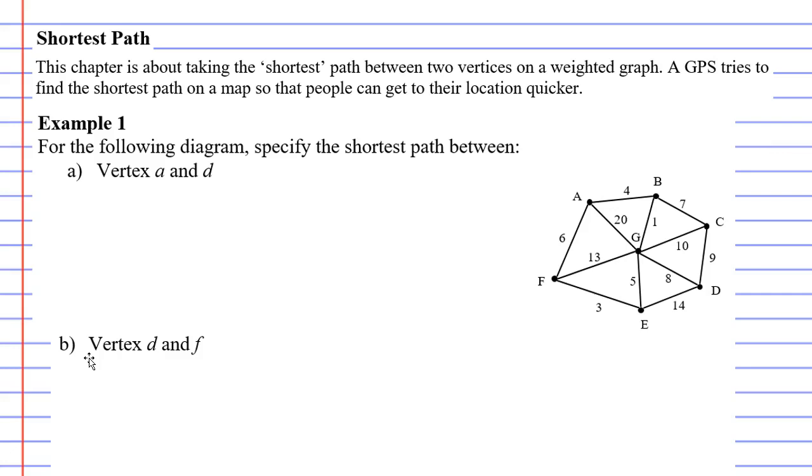For the following diagram, specify the shortest path between, and for question A we want to find the shortest path from vertex A to vertex D. We're going from vertex A, this is where we're starting, and we're finishing at vertex D.